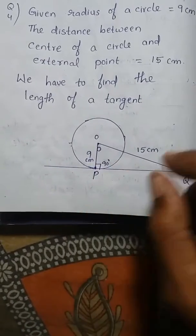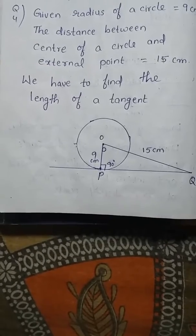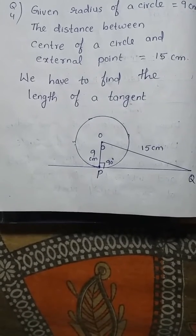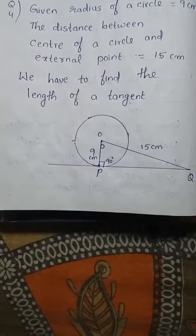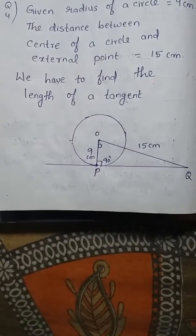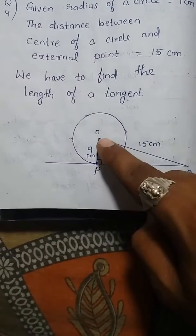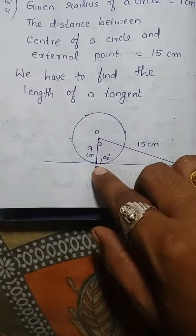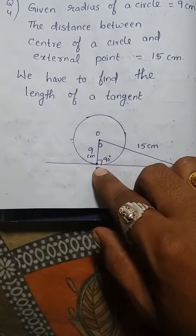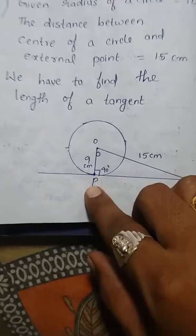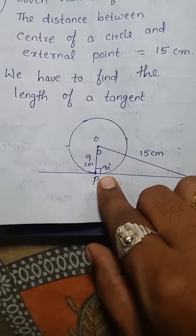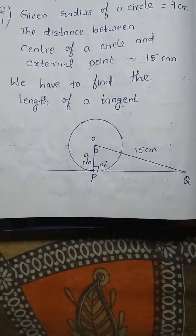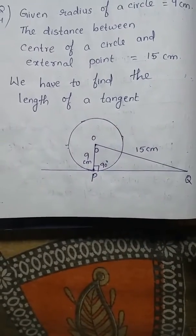The angle at P is 90 degrees. We know that the tangent at any point of a circle is always perpendicular to the radius through the point of contact, meaning the radius and tangent are always perpendicular to each other at the point of contact, that is at P. Since this angle is 90 degrees, triangle OPQ is a right angle triangle.